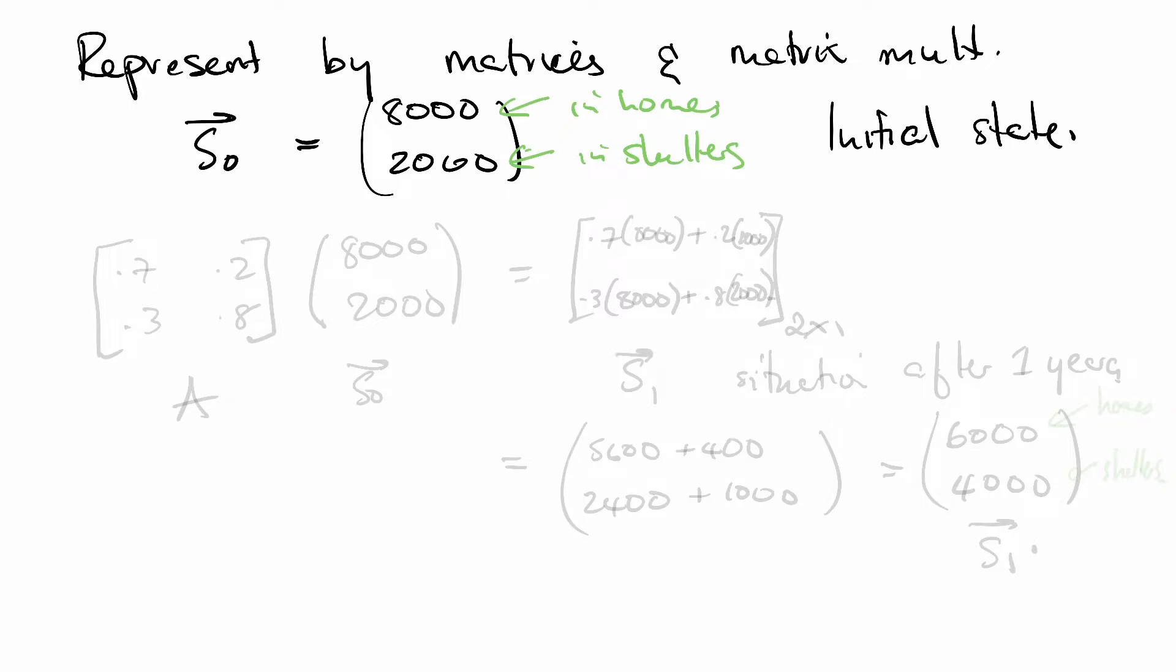And then we can represent what happens year over year with matrix multiplication. So say we've got our initial state. We want to know what happens after a year. So we've got 0.7, we've got 0.2, 0.3, and 0.8. So we're going to call this the matrix A. Here's our S₀. And this matrix over here, which is going to be a 2 by 1 matrix, is going to represent what happens after one year. So we're going to call this S₁, which is the situation after one year.